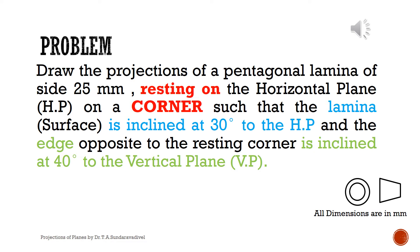Whenever a projections of planes problem is considered, we have to check three things. One is the resting condition, denoted in red color — resting on a corner. Second is surface inclination, denoted in blue color — how the surface of the lamina is inclined either to HP or VP. Third is edge inclination, denoted in green color — how the edge is oriented with the horizontal plane or vertical plane. These three things are very important.